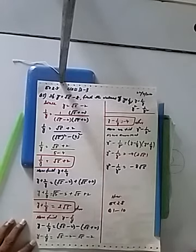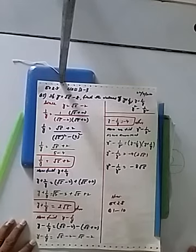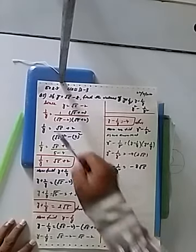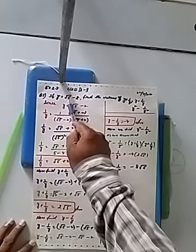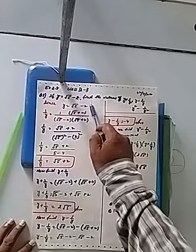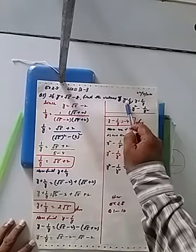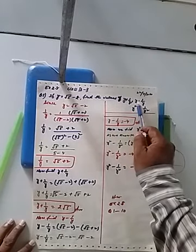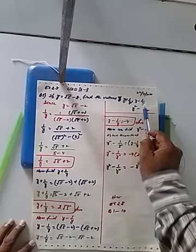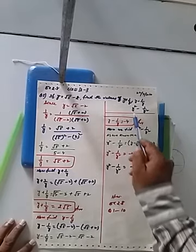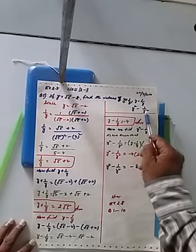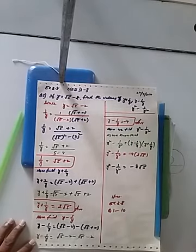For students of class 9th and 10th, exercise 2.8, question number 5: if y is equal to under root 5 minus 2, find the value of y plus 1 upon y, y minus 1 upon y, and y square minus 1 upon y square.